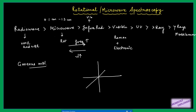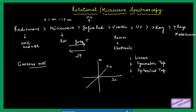Rotational motion — if we consider a molecule in a three-dimensional way, it can have three types of moment of inertia. Moment of inertia is generated by rotation. We consider three moments of inertia in the x, y, and z directions. Based on the values of these moments of inertia, we can classify molecules into four categories: linear molecules, symmetric top, spherical top, and asymmetric top.